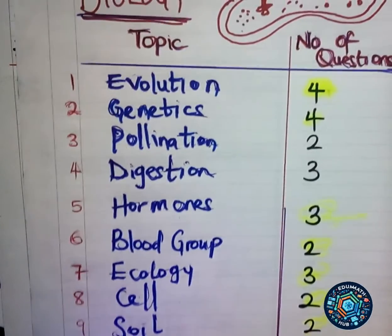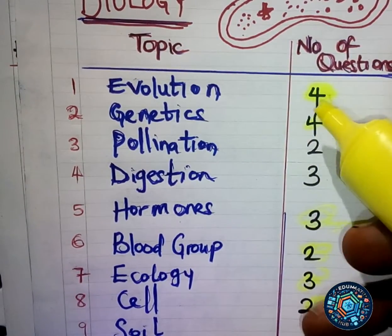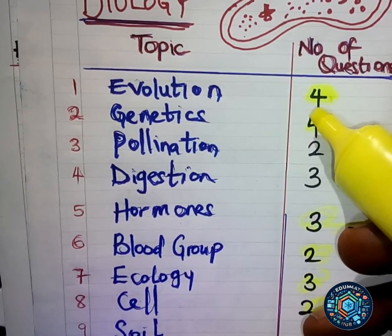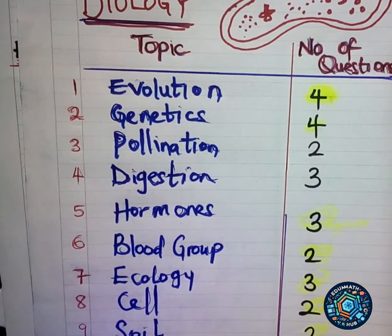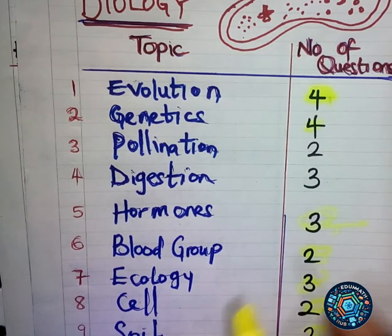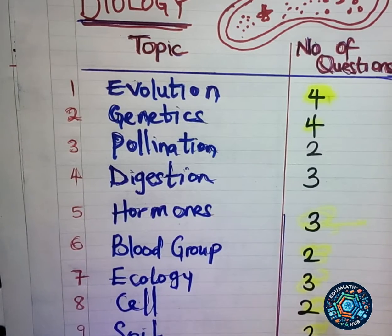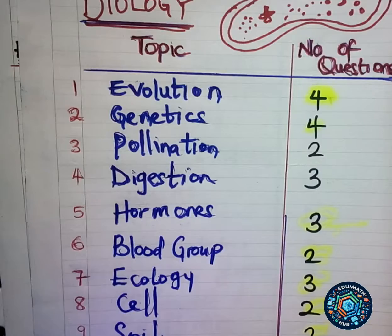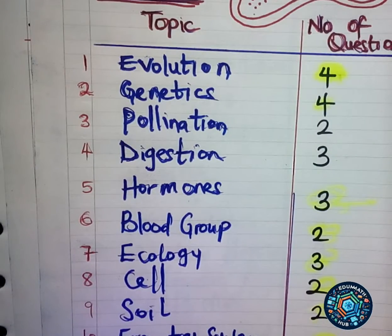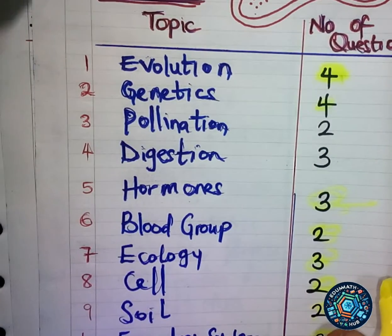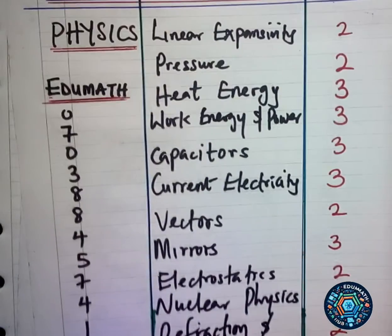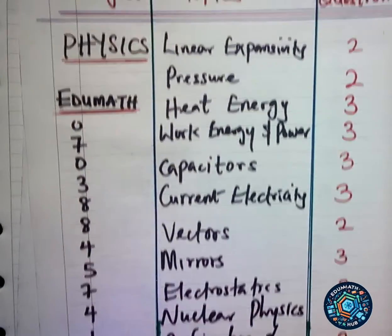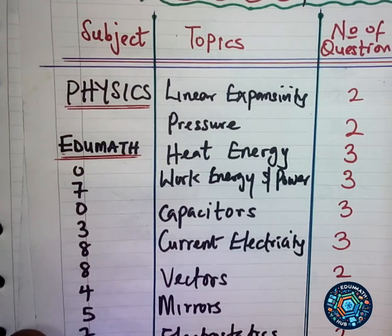This breakdown tells you to focus more on ecology, genetics, digestion, and these other topics. You also need to check your syllabus carefully because JAMB cannot set all the questions from this list alone — consider the topics not covered here and put your strength on those as well. Now let's move to the next subject: physics.